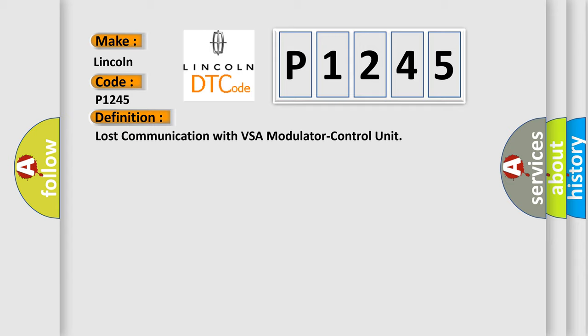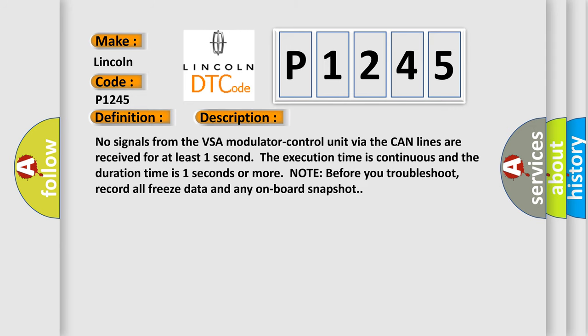And now this is a short description of this DTC code. No signals from the VSA modulator control unit via the CAN lines are received for at least one second. The execution time is continuous and the duration time is one second or more.